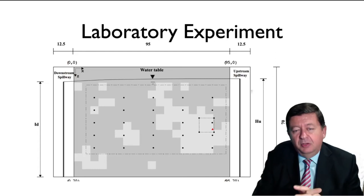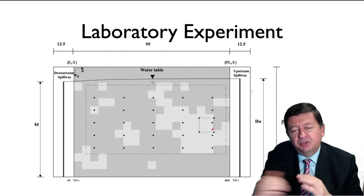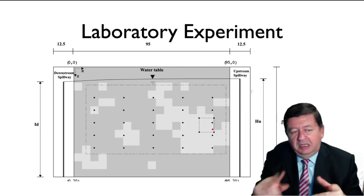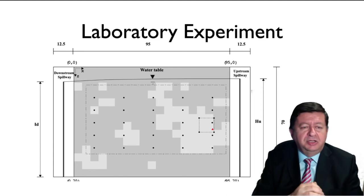A schematic view of the sandbox: we have a constant hydraulic head on the right border and another constant hydraulic head on the left border, so the water goes from right to left. The size of the sandbox is about 95 centimeters in width and 70 centimeters in height.